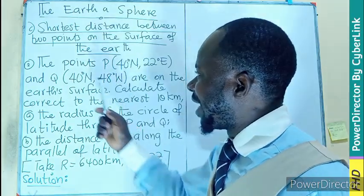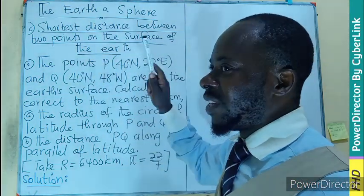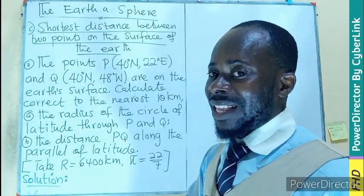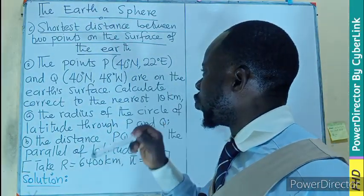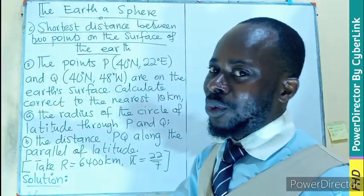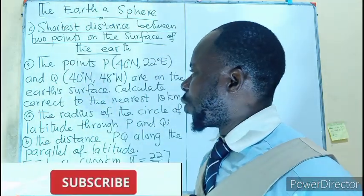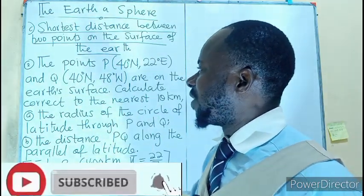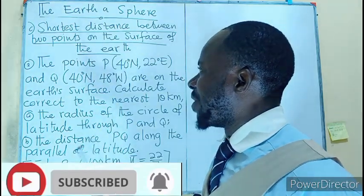So in this episode, we are picking the point P having a coordinate 40 degrees north, that is latitude 40 degrees north and 22 degrees west. That is latitude, longitude. And the point Q is also having latitude 40 degrees north and longitude 48 degrees west.